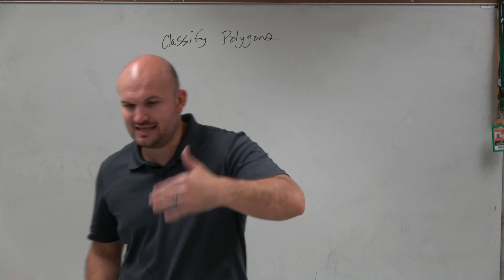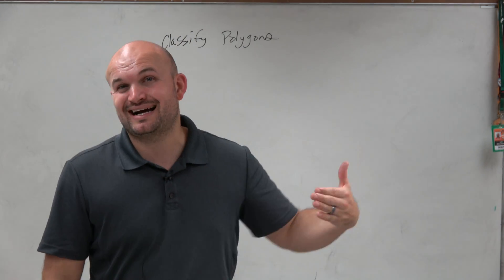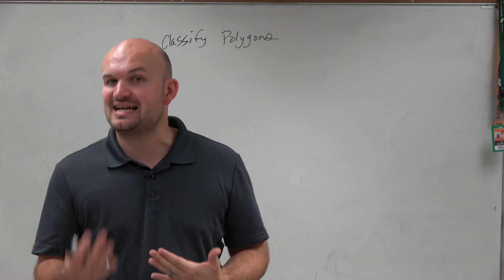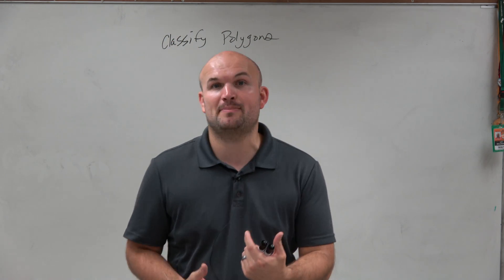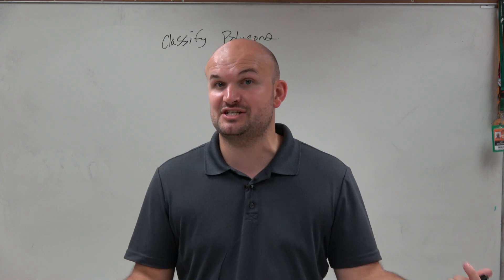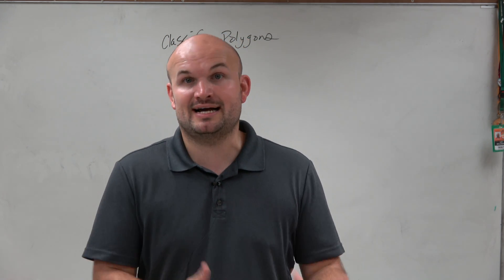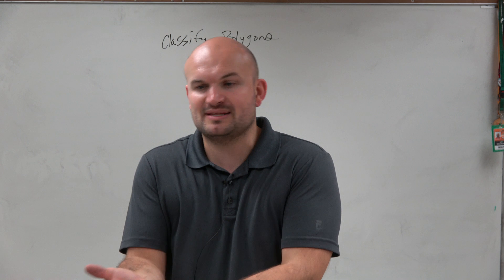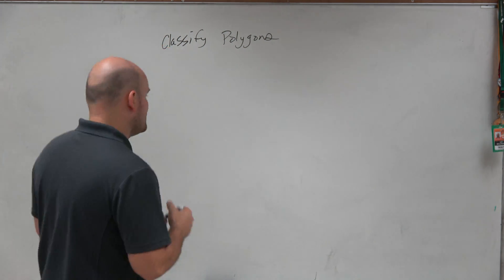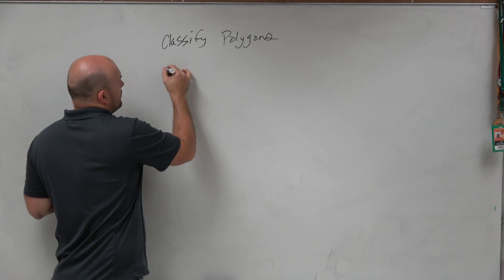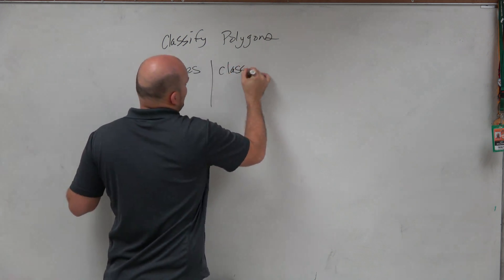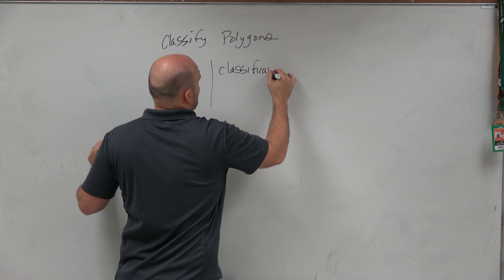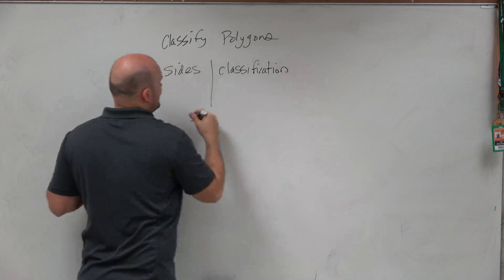So what I'm going to do is I'm just going to label how many sides each polygon has and then the way we classify them. Because you'll often see that a lot of times we'll refer to a polygon based on its classification name, not telling you what the polygon looks like. So it's important to know which is which.